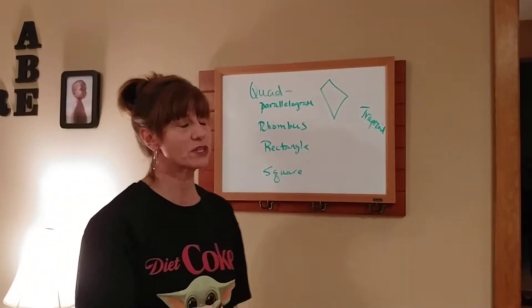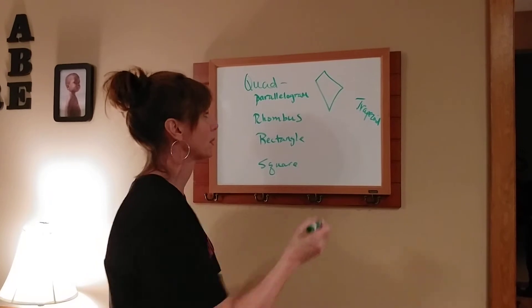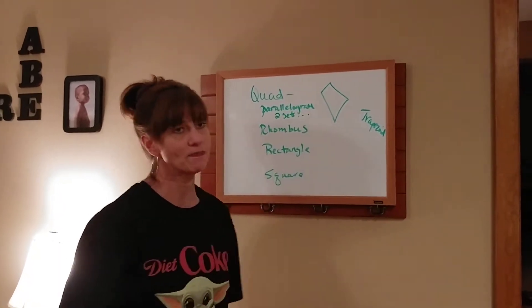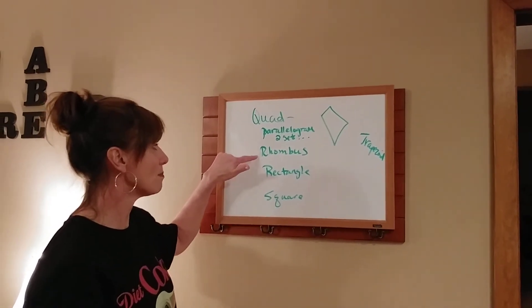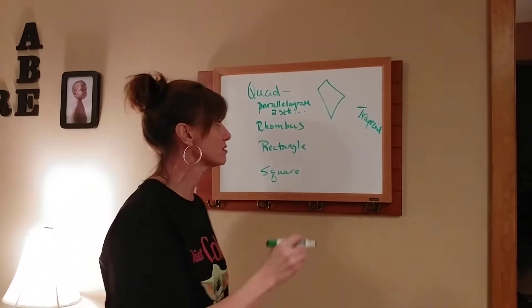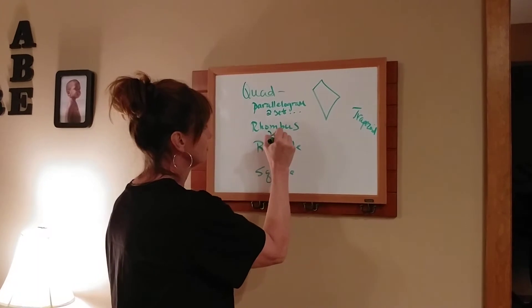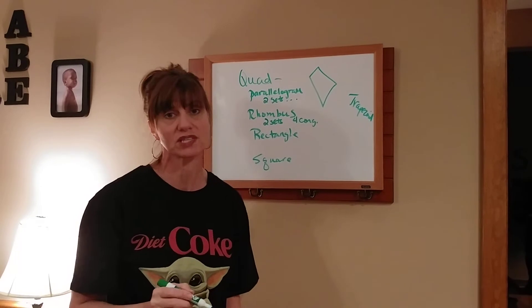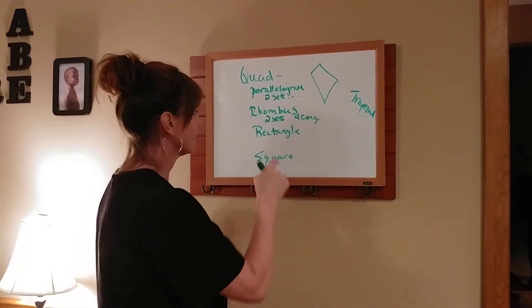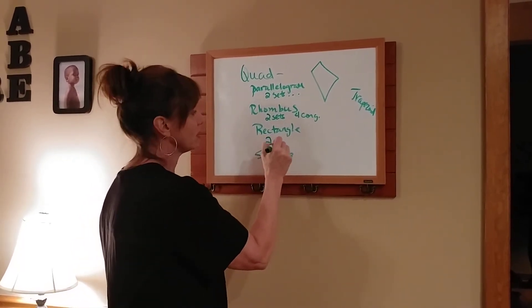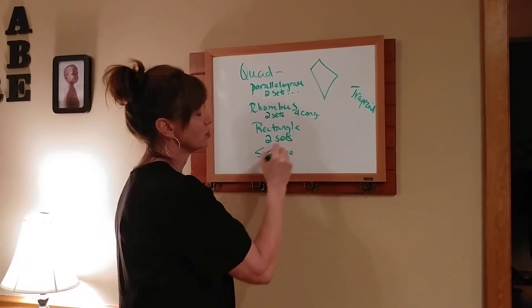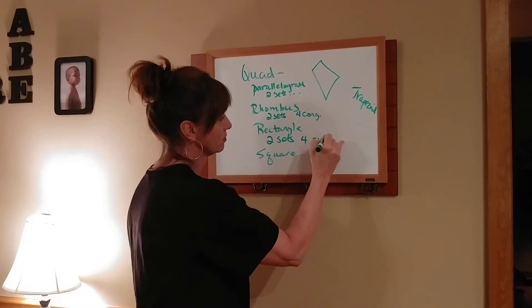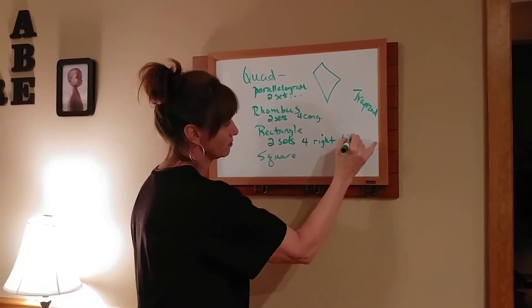The definition for parallelogram — some of you got it — it was just two sets of parallel lines. Then you go down, and rhombus is two sets of parallel lines, same thing, with four congruent sides, so all the sides are the same length. Rectangle: two sets of parallel sides. You do not have to have congruent sides, but you have to have four right angles.